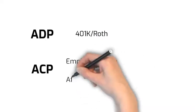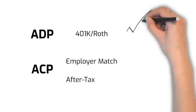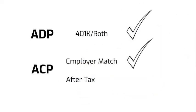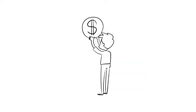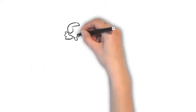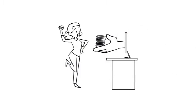most parts of the ADP-ACP test are waived, except for the after-tax contribution part of the ACP test. This will give highly compensated employees a lot more freedom when deciding how much contribution to make. Safe Harbor contributions are also always 100% vested immediately.